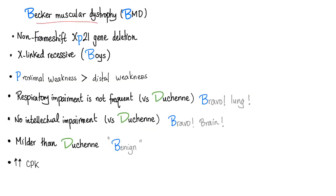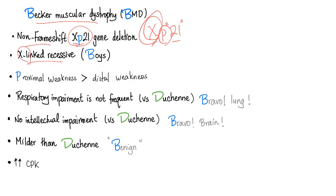In Becker muscular dystrophy, there is a non-frameshift deletion in the gene called XP21. X means it's the X chromosome; P means the short arm of the X chromosome; and 21 is segment number 21 of the short arm. That's why it's X-linked recessive — and being X-linked recessive means it's going to be commoner in males than females.